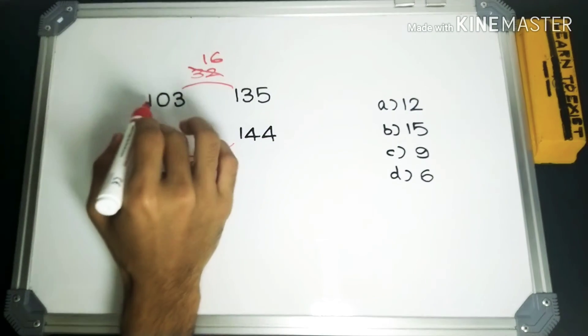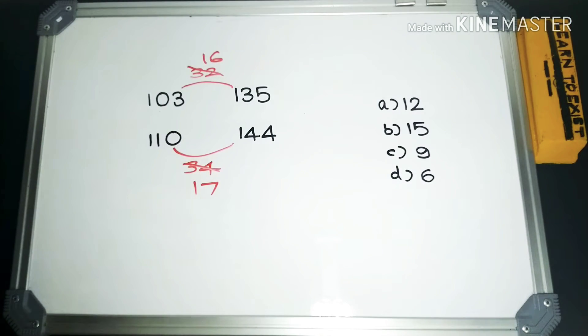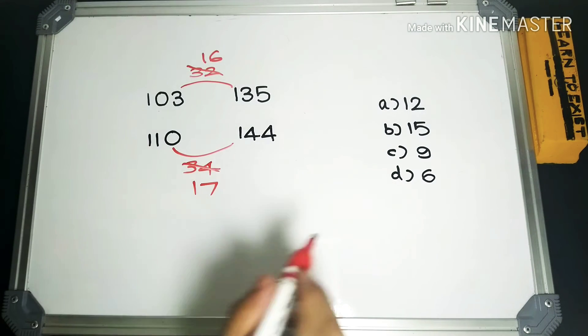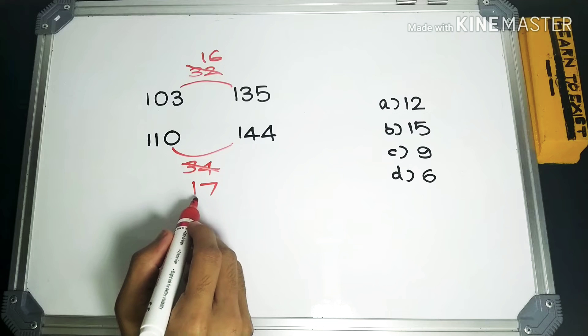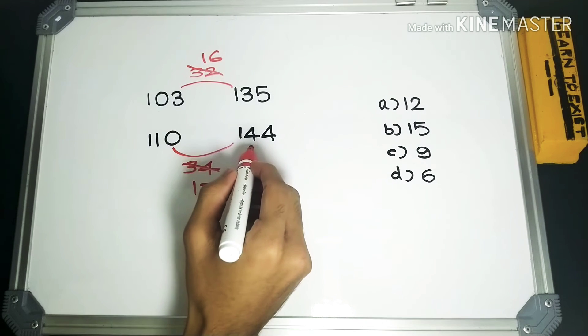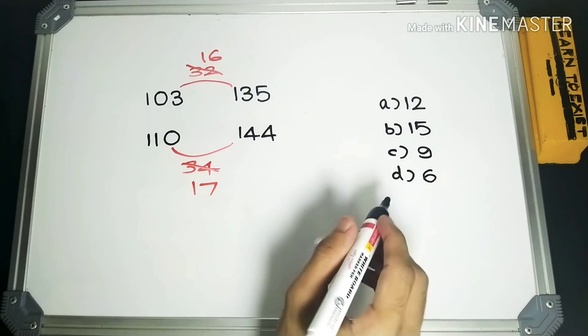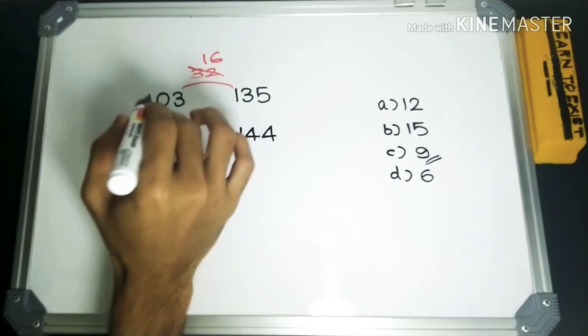That number when added with 103 should make it a multiple of 16, and the same goes with 135 also. Similarly, that number when added with 110 should make it a multiple of 17, and the same goes with 144 also.